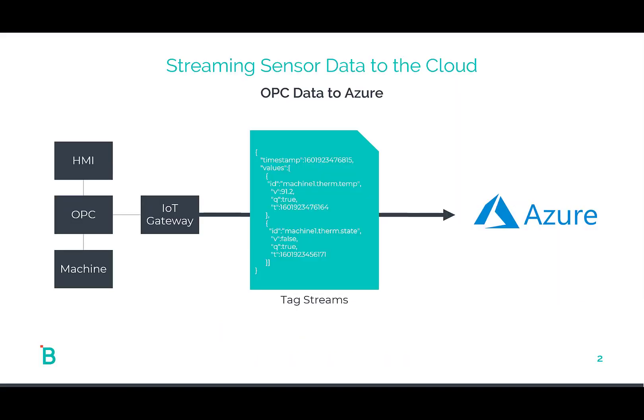If you Google getting OPC data into Azure, 90% of what you'll find is this use case: streaming sensor data to the cloud. I'm here to tell you that if your Industry 4.0 solution is streaming sensor data to the cloud, you're doing it wrong.